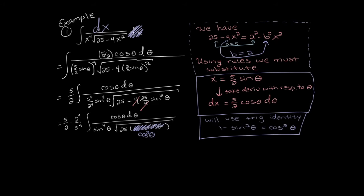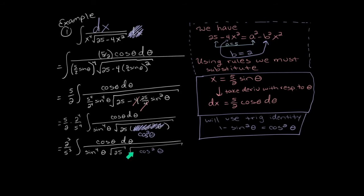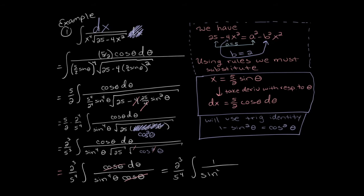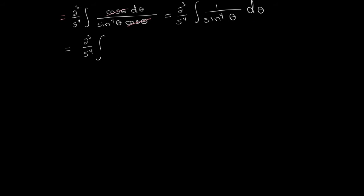Continuing to simplify: cancel a 5 and a 2 in the numbers. Take the square root of 25 and the square root of cosine squared separately — the square root cancels with the square, leaving a single cosine in the denominator. The cosine in the numerator and denominator then cancel, leaving us integrating 1 over sine to the fourth d theta. Since 1 over sine is cosecant, we're integrating cosecant to the fourth — a power of a trig function from the last section.